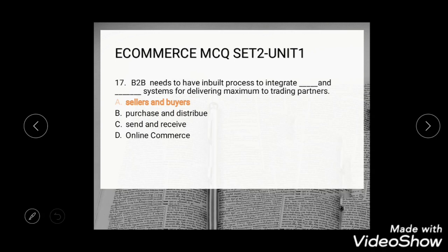Question 15: B2B needs to have inbuilt processes to integrate dash and dash systems for delivering maximum value to trading partners. Options are sellers and buyers, purchase and distribute, send and receive, and online commerce. The correct answer is sellers and buyers.